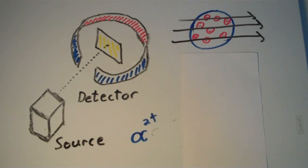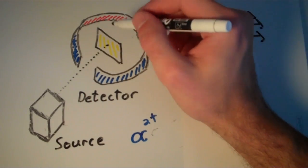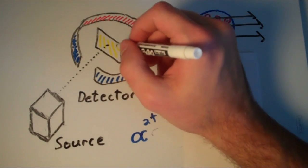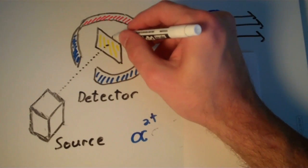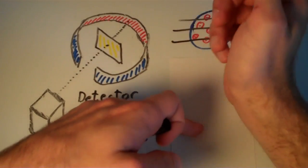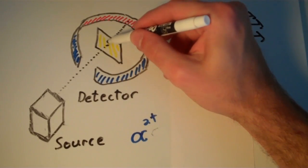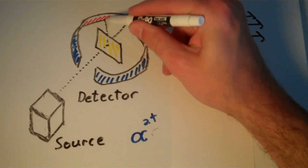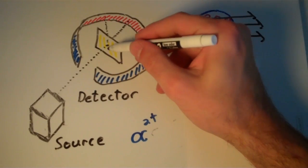But what his results really were, were that most of the alpha particles did pass through. But some of them were actually deflected off into other parts of the detector. And some of them even bounced backwards.